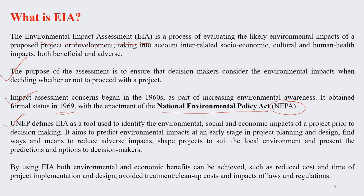The United Nations Environment Programme (UNEP) defines EIA as a tool used to identify the environmental, social and economic impacts of a project prior to decision making. It also aims to predict environmental impacts at a very early stage of project planning and design. It finds ways and means to reduce the adverse impact of a project on the environment and helps the project adjust to the local environment, thus presenting predictions and options to decision makers.